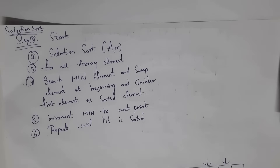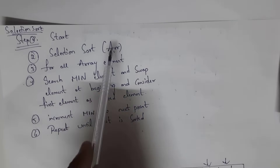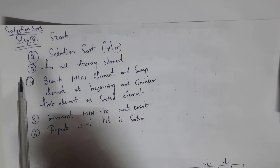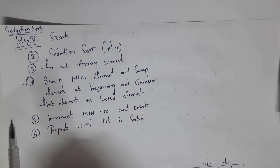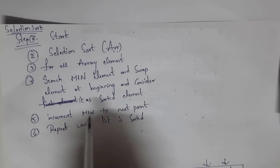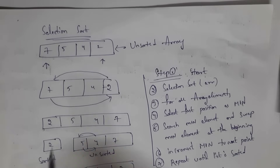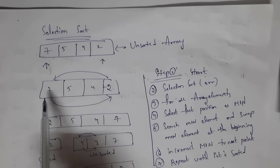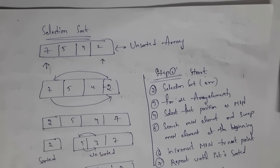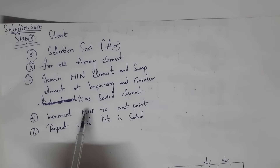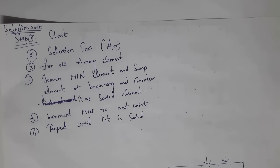Now the algorithm for selection sort. Step 1: Start. Step 2: SelectionSort(array). Step 3: For all array elements, search for the minimum element, swap it to the beginning, and consider it as sorted. Step 4: Increment the minimum pointer to the next position. Step 5: Repeat until the list is sorted. This is the algorithm for selection sort.